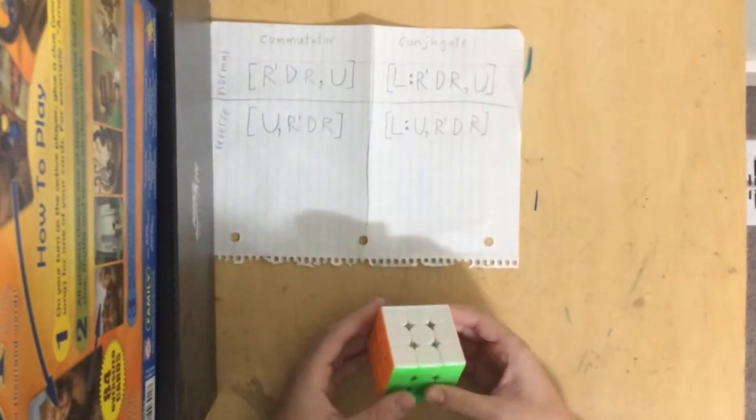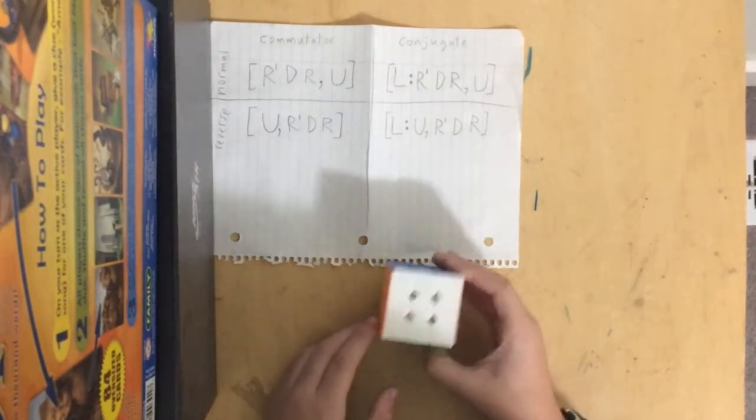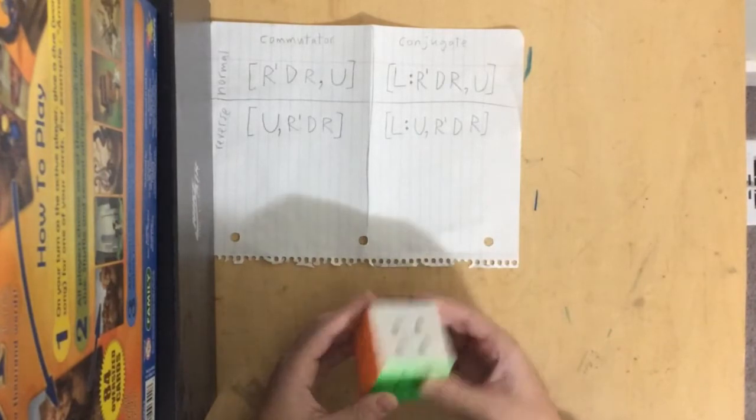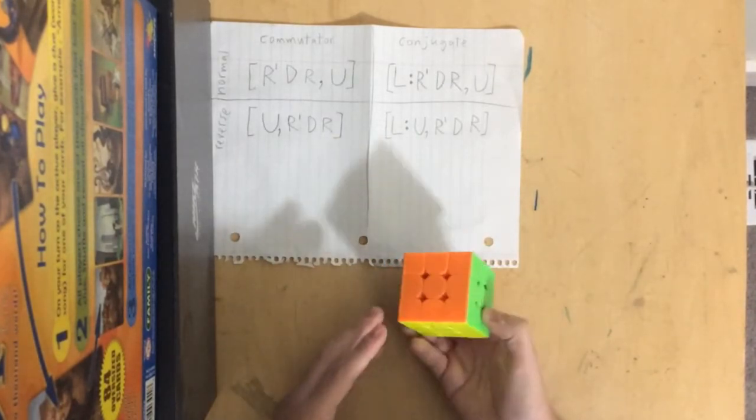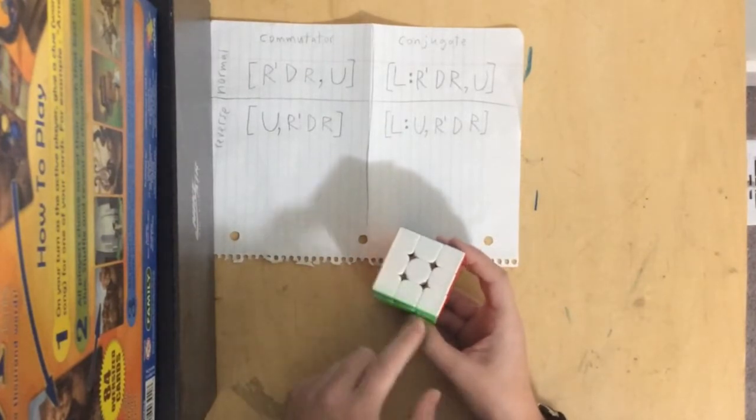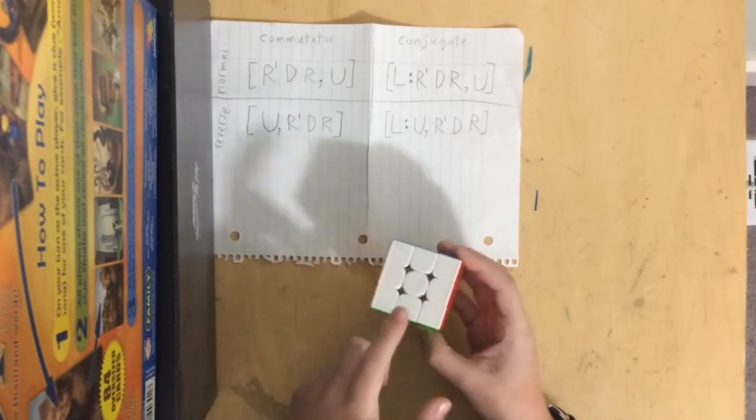So now, so just like old Pochmann corners, Orozco solves one piece at a time. So what you do is you just memorize your corners normally, and you use the UFR, which is the letter C in the Speffz scheme. Use this as your buffer.